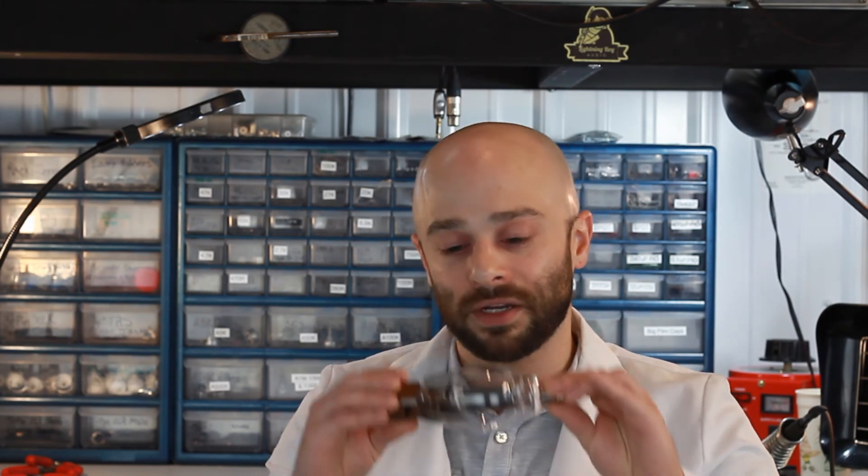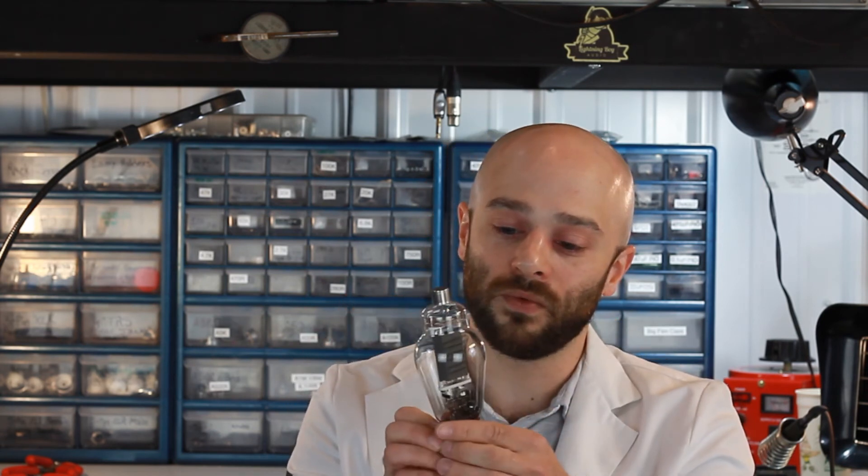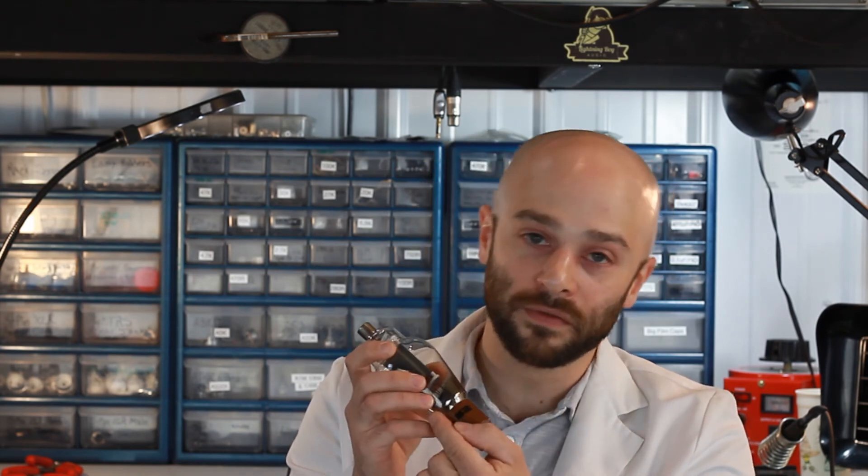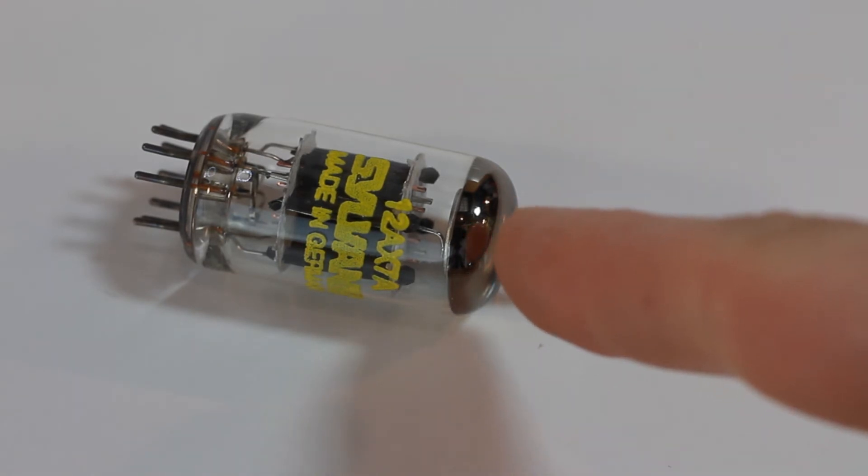When you're manufacturing a vacuum tube, the manufacturer will use these inductive coils to cause the getter to flash. That is this little silver bit that you'll normally see at the top of a tube and preamp tubes especially.